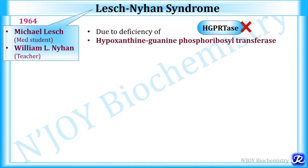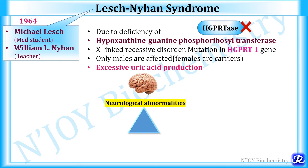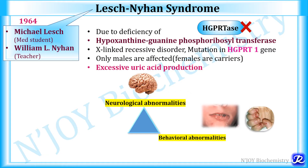Lesch-Nyhan syndrome is due to deficiency of the enzyme hypoxanthine-guanine phosphoribosyl transferase. It is an X-linked recessive disorder caused by mutation in the HGPRT1 gene. As it is X-linked recessive, only males are affected; females are just carriers and do not display the characteristic features of Lesch-Nyhan syndrome. There is excessive uric acid production, and the syndrome is associated with a triad of neurological abnormalities, behavioral abnormalities, and hyperuricemia.